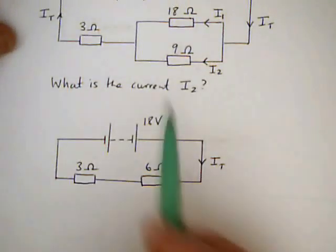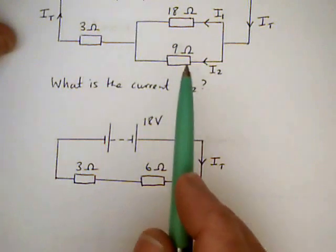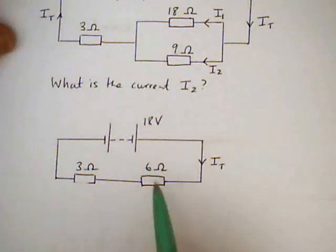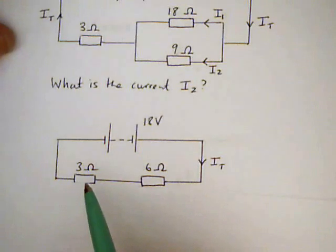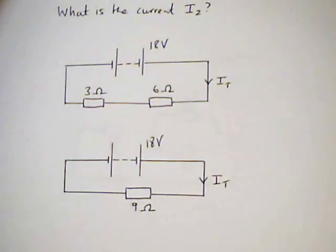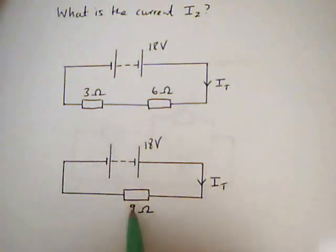We know that 18 and 9 in parallel have an equivalent resistance of 6. You should know how to show that. And then we've got 6 in series with 3, and so the circuit reduces down to a single resistance of value 9.